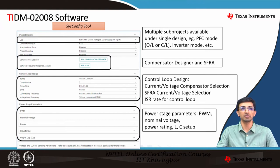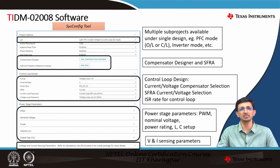Then there are power stage parameters where you can configure your PWM, the nominal voltage, the power rating, the filter inductor, the output capacitor, and voltage and current sensing parameters used for protection purposes. You give high-end and low-end values based on which protection is defined, and the PWMs can be tripped using the values you provide.